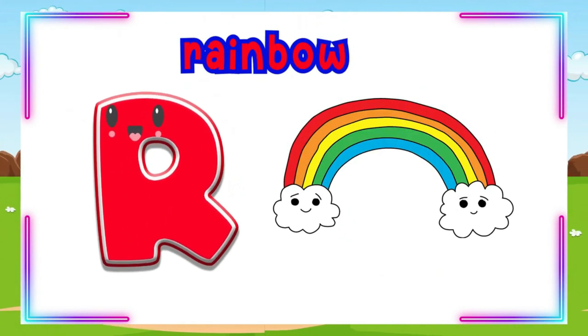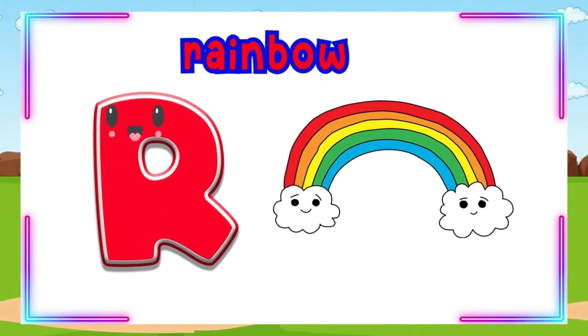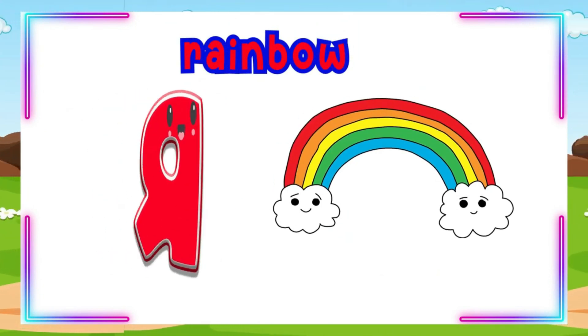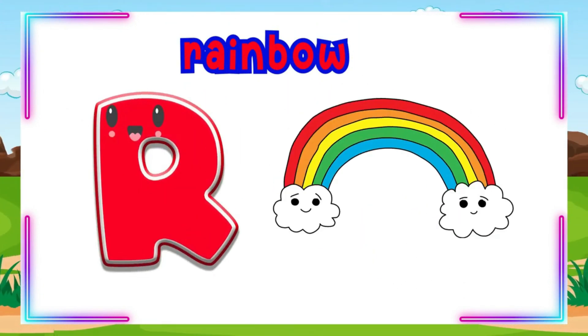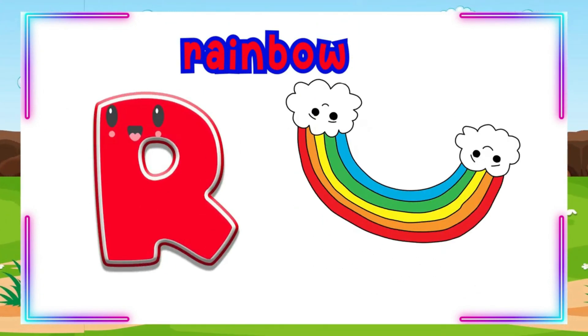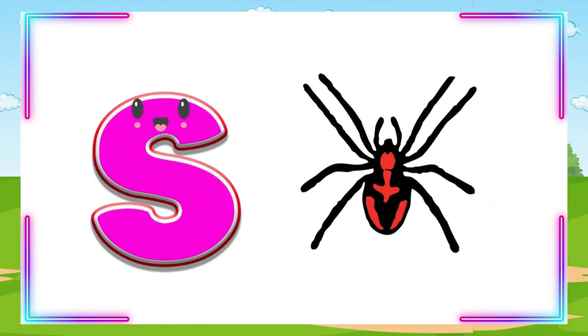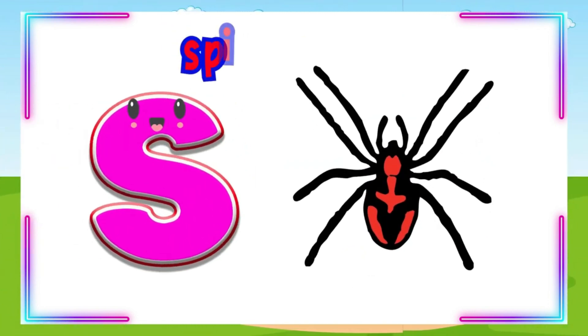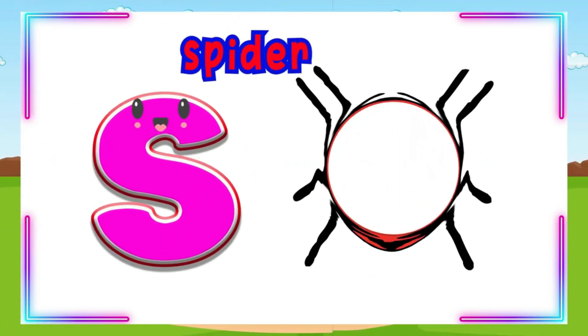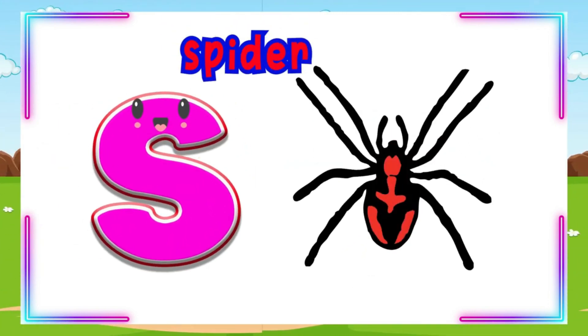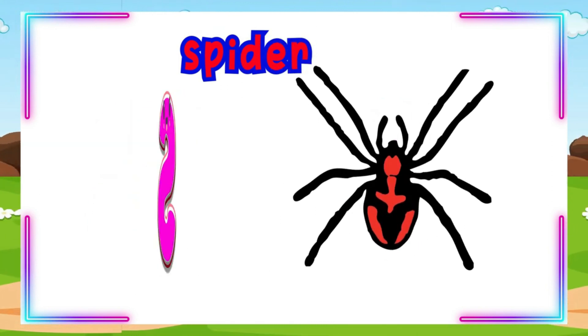R is for Rainbow. R-Rainbow, R-Rainbow, R-Rainbow. S is for Spider. S-Spider, S-Spider, S-Spider.